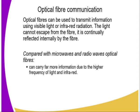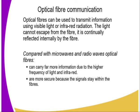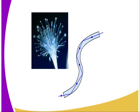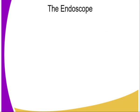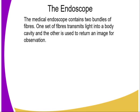Compared with microwaves and radio waves, optical fibers, number one, can carry far more information due to the high frequency of light and infrared, and they are more secure because the signals stay within the fibers. So the fastest broadband uses optical fibers. As you can see from this diagram, this is a perfect example of the application of fiber.